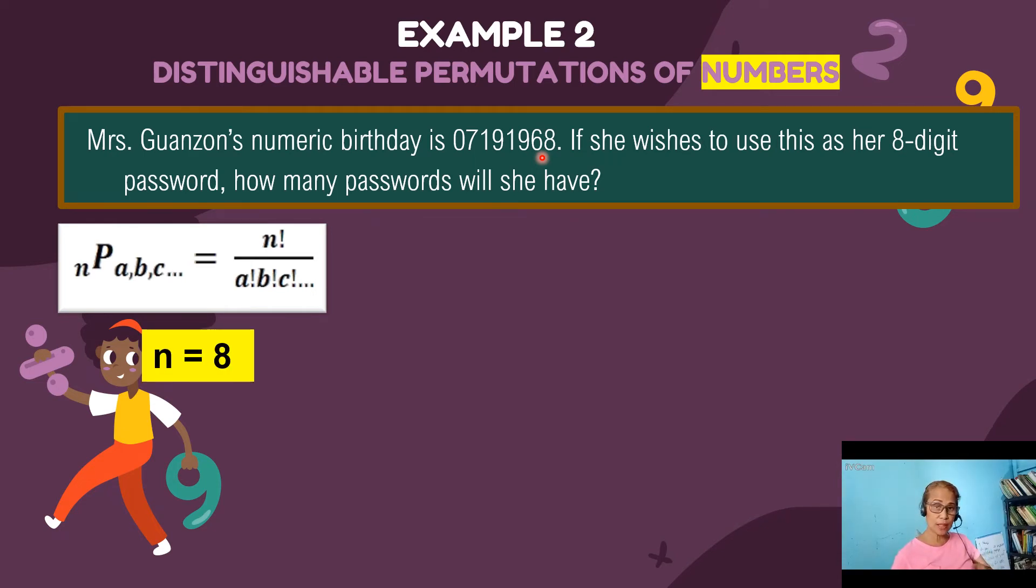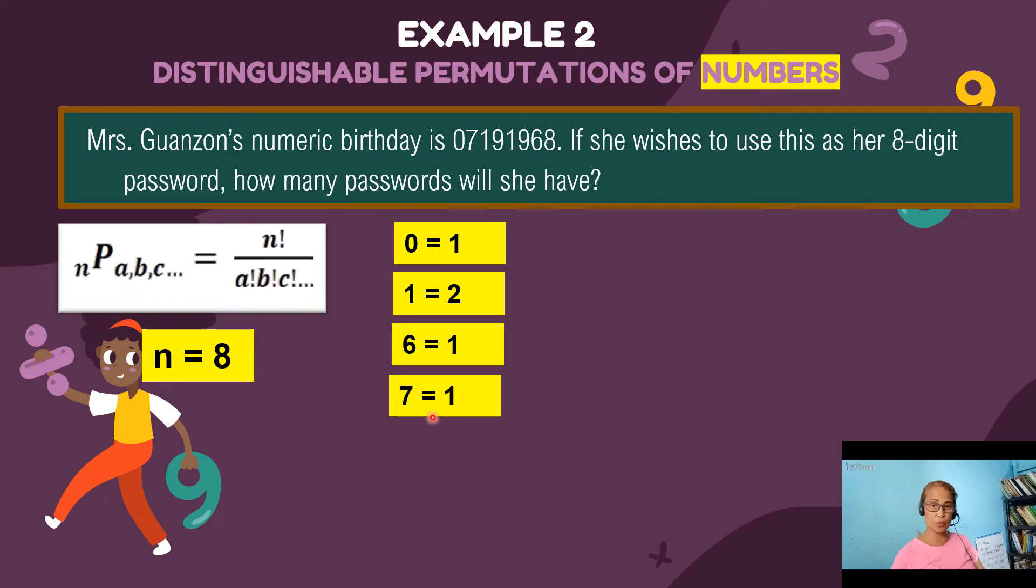Then listing all the distinct numbers. Zero, there's only one. One, the digit one appeared twice. Next, six appeared once only. Seven is also once. Eight once also. And nine appeared twice.